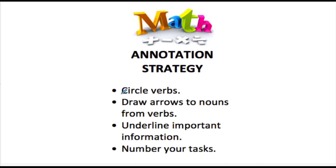When we read through a word problem, we want to circle the verbs. Every time we see a verb, we're going to circle it. That's going to help us understand that this is something being done, and it'll help us understand how all of the actions in the problem are connected to each other.